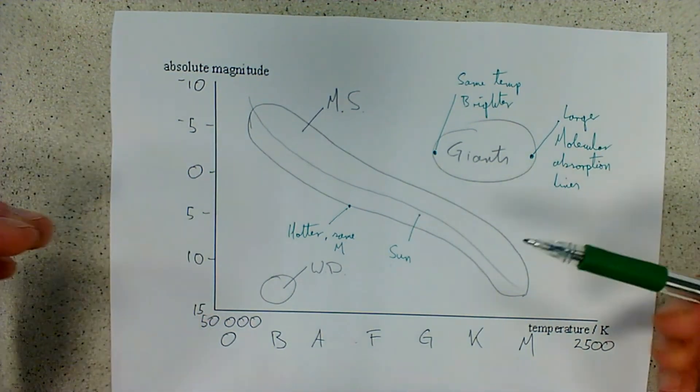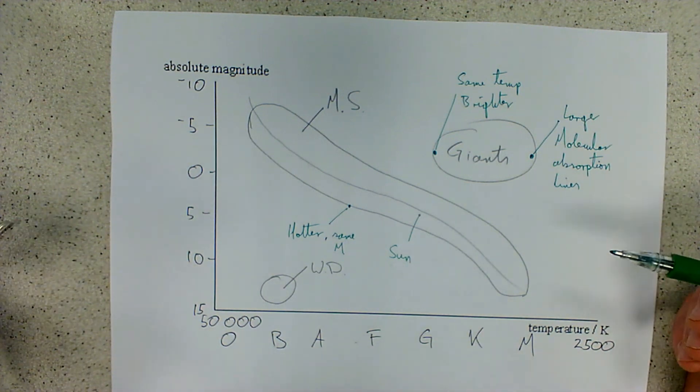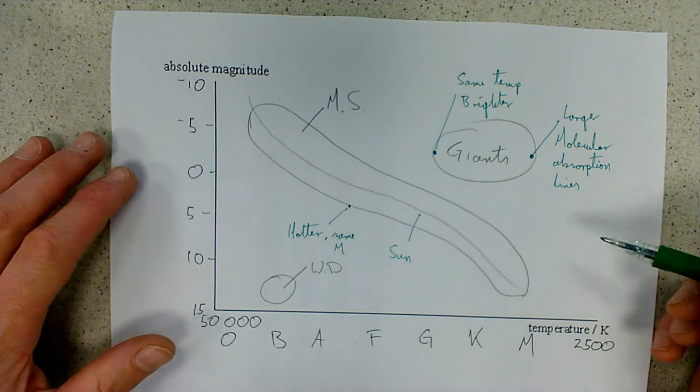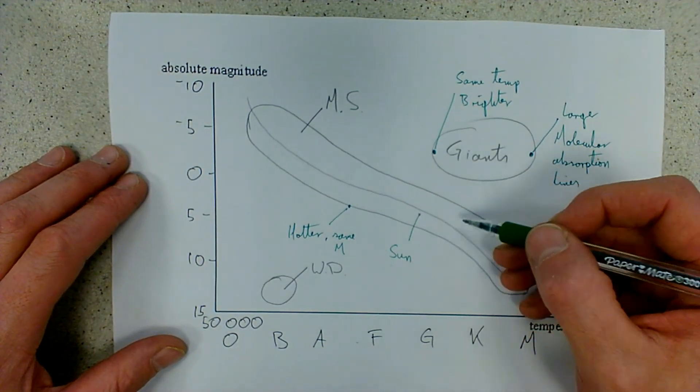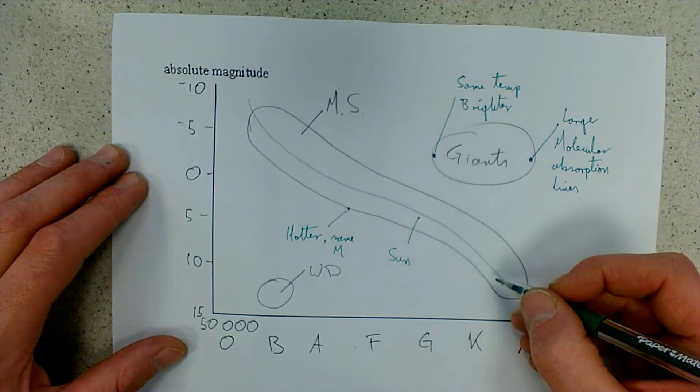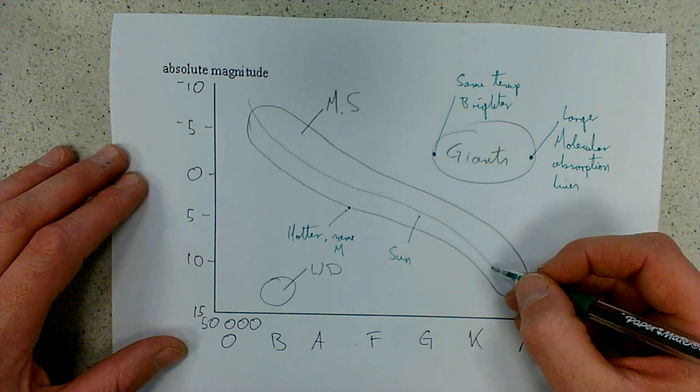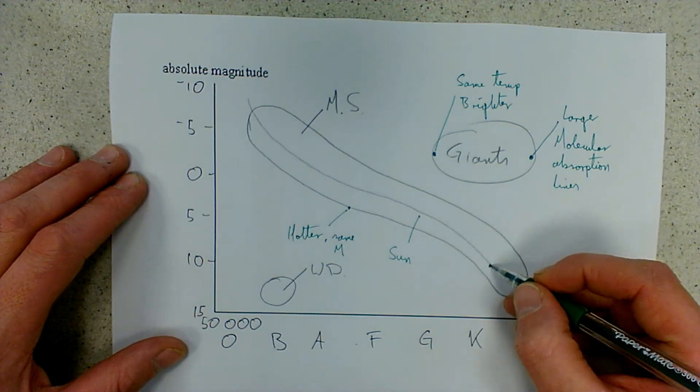And so we can then look at different stars. We can think about a star which is the same size as the Sun but significantly cooler. So that would be any star over here in its main sequence, cooler stars in the K and M class. So this one here might be the same size.